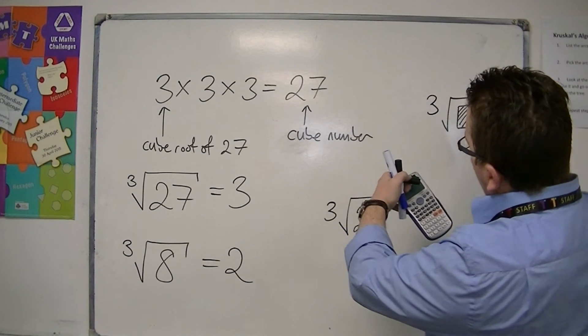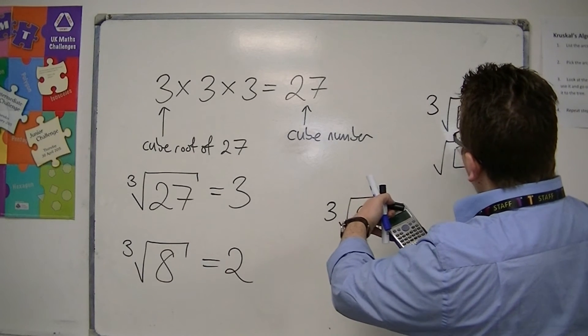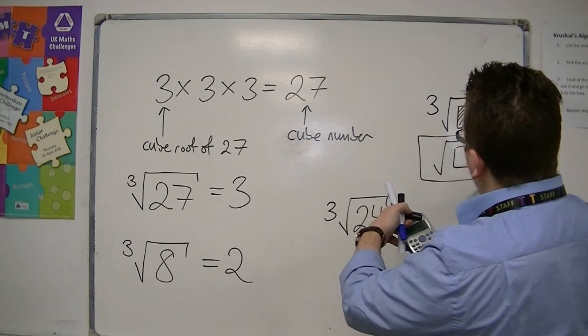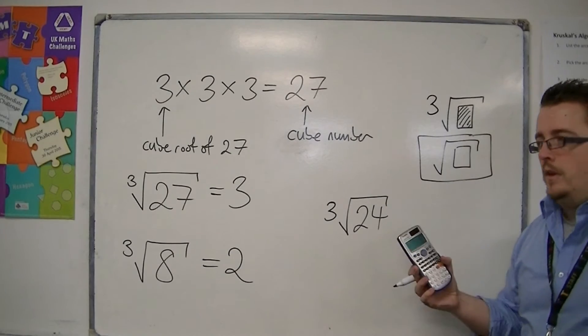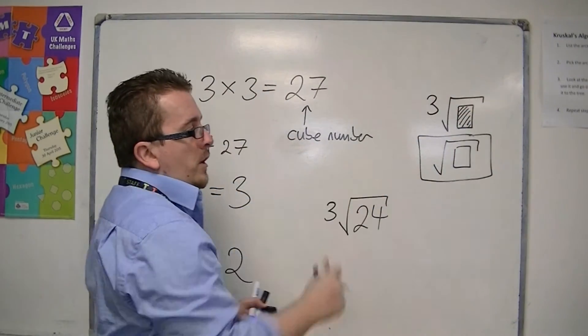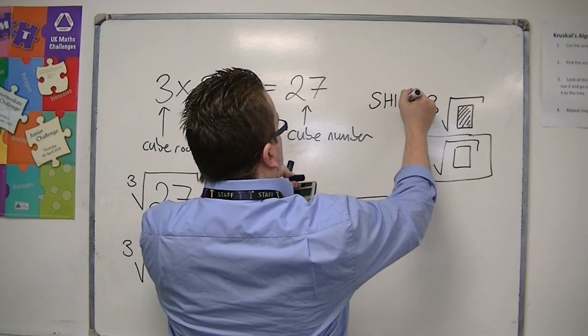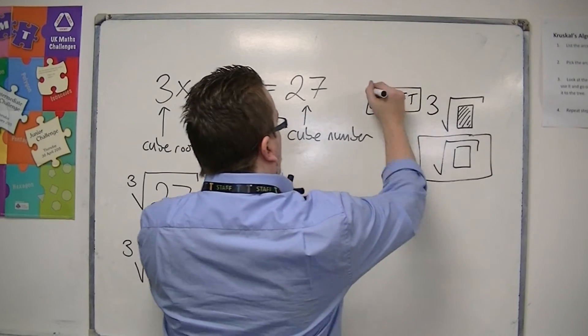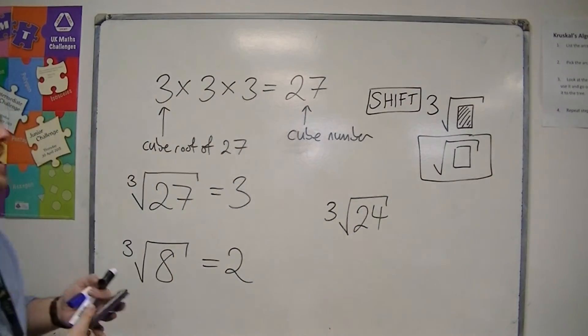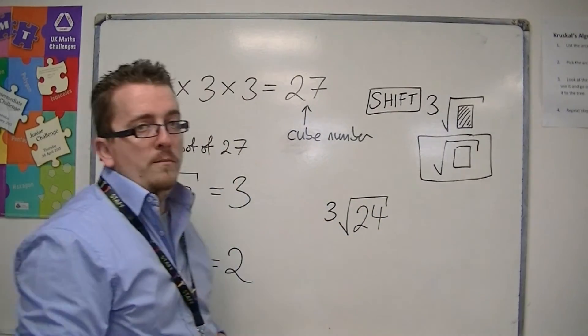So it's in yellow, or orange, and it is above the actual button for the square root symbol. And in order to get anything that is in the orange on the calculator, you need to press shift first. So you need to press shift, and then the square root button, to access the cube root button.